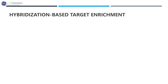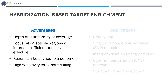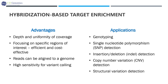Hybridization-based target enrichment provides the following benefits: depth and uniformity of coverage required for genetic variant discovery studies; focusing on specific regions of interest, efficient and cost-effective; reads can be aligned to a genome; and high sensitivity for variant calling. Hybridization-based assays may offer a wider scope for superior performance through optimization of baits design. It works well for genome typing and rare variant detection, including single nucleotide polymorphism detection, indel detection, copy number variation detection, and structural variation detection.